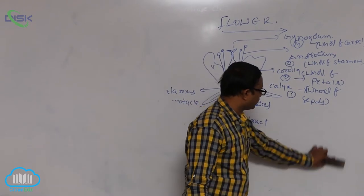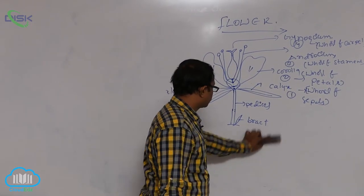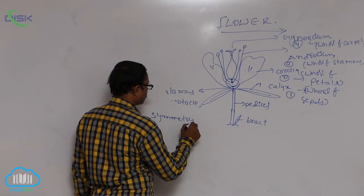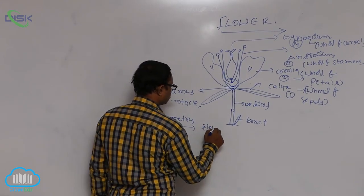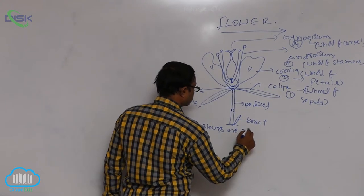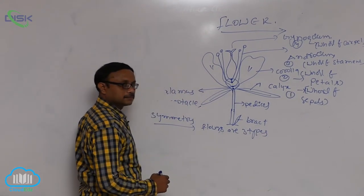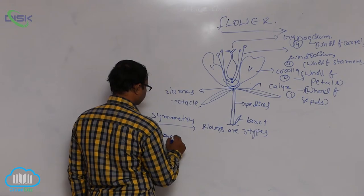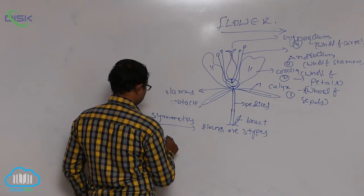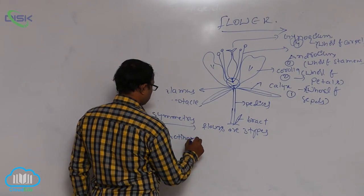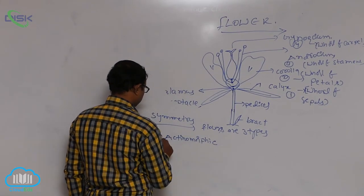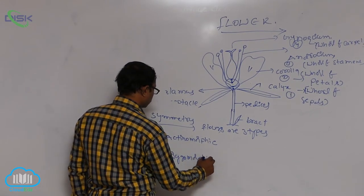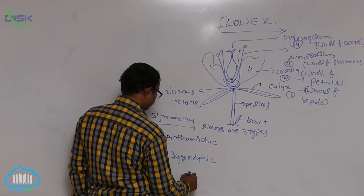Based on symmetry, flowers are three types: actinomorphic, zygomorphic, and asymmetric flowers.